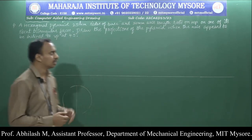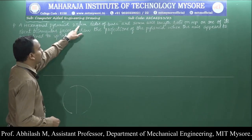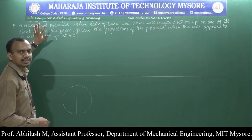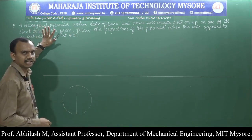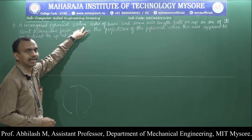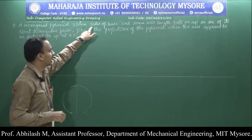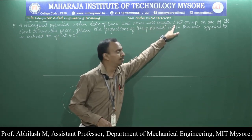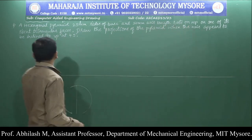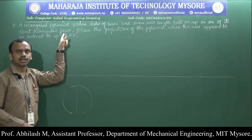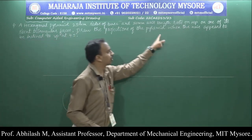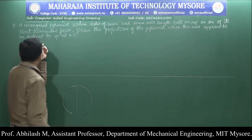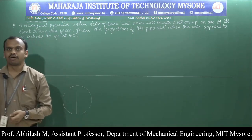The new problem statement is: hexagonal pyramid, 25 millimeter sides of base. A hexagon has 6 sides, a pentagon has 5 sides. So this hexagonal pyramid has 25 millimeter sides of base and 50 millimeter axis length, resting on HP on one of its slant triangular faces. Draw the projections when the axis appears to be inclined to VP at an angle of 45 degrees.